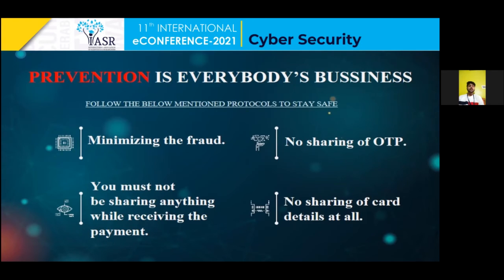If the perpetrator is caught, they are punished under IT Act Section 66C — punishment for identity theft — and Section 66D — punishment for cheating by personation using computer resources — and under IPC Section 420, cheating and dishonestly inducing delivery of property. Since our IT Act is very weak, these crimes are bailable offences, and once the offender gets bail, they return to duping more victims. The punishment under these IT Act sections is imprisonment of up to three years and a fine which may extend to one lakh rupees, while under IPC 420 the imprisonment is up to seven years with or without fine.